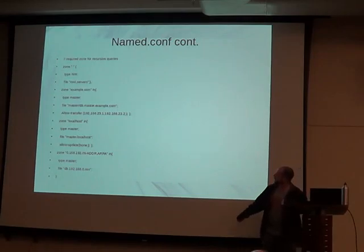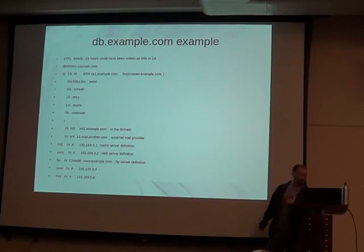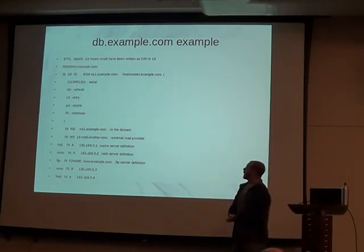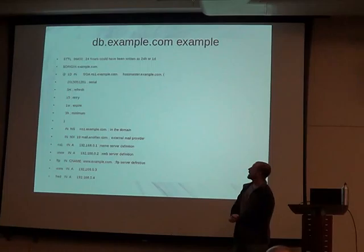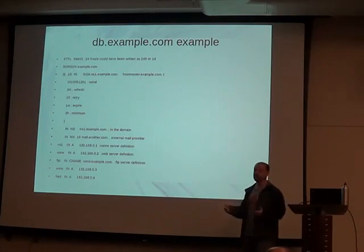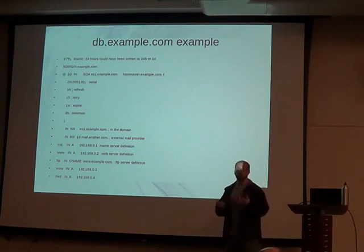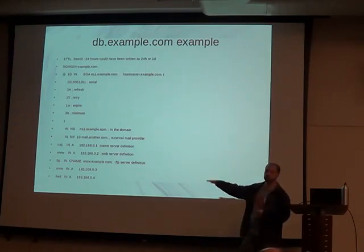Looking at the master/db.master.example.com file, the first line is our TTL — time to live. That's how long this information is good and how long people are allowed to cache it. If this is something for a web server that never changes its IP, we'll make that a longer timeframe. If it's something that changes constantly, we'll make it shorter. You set the TTL based on how often you expect any of this information to change.